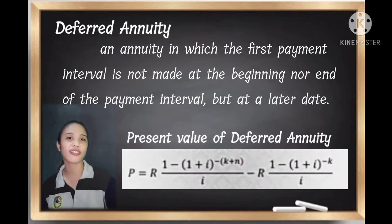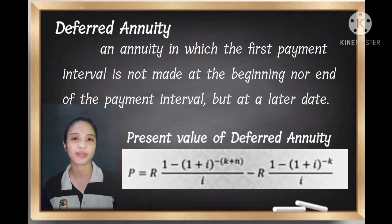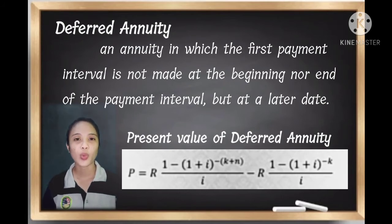Here's the formula for finding the present value of the deferred annuity. P equals R times 1 minus 1 plus I raised to negative K plus N, all over I, minus R times 1 minus 1 plus I raised to negative K, all over I.